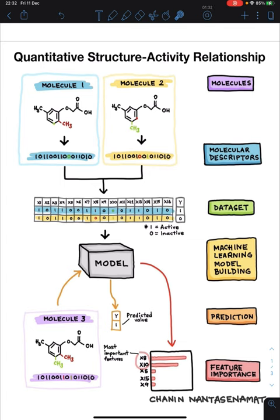In this schematic diagram that I've drawn in an iPad, it shows the cartoon illustration of the entire workflow of the QSAR process, which entails the collection of a dataset of molecules. In this example, we have molecule 1 and molecule 2, and in a practical setting, there will be much more than two molecules. There could be a hundred, a thousand, or even more than that.